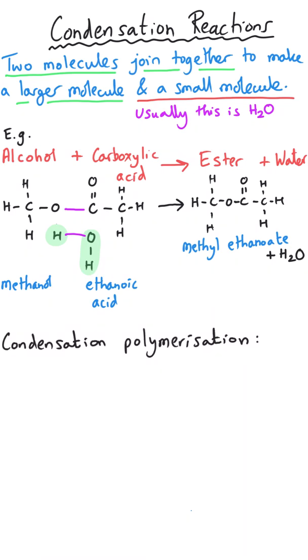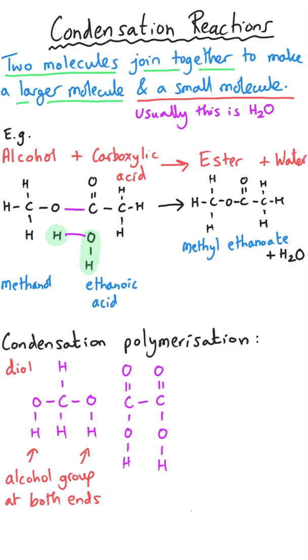In condensation polymerization, this happens again, but it happens from both ends of the molecules. So we need a special kind of alcohol called a diol, which means you've got an alcohol group at both ends, and a special kind of acid called a dicarboxylic acid, which means you have a carboxylic acid group at both ends. And what happens in terms of the bonding is, as you would expect, similar to what I outlined before. The hydrogen is lost from the alcohol along with the OH from the carboxylic acid, hence the condensation, because that water is removed from the structure.